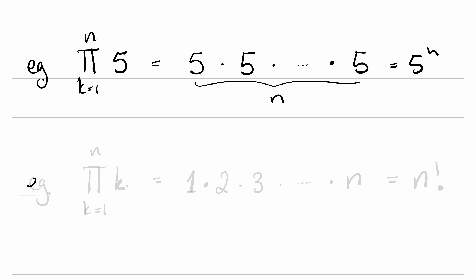Here's another example. Here the dummy variable also appears, both in the things to be multiplied and underneath the pi. So what is this going to be? Well, what happens when k is equal to 1? We get the number 1.